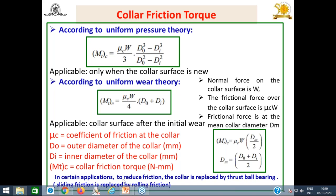When designing a power screw with a thrust ball bearing instead of a collar, the torque required to overcome collar friction need not be determined because sliding friction is replaced by rolling friction, which is negligible. This is the important point: if collar is used, find the collar friction torque; if thrust ball bearing is used, neglect it.